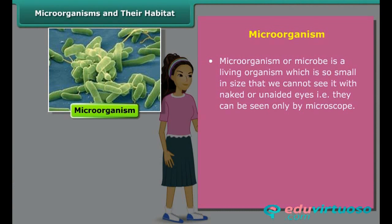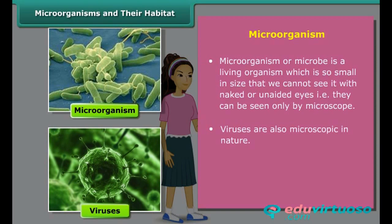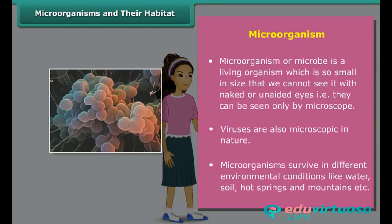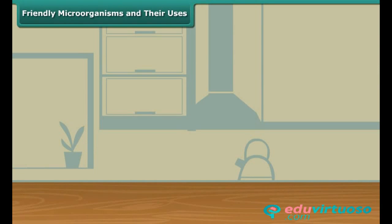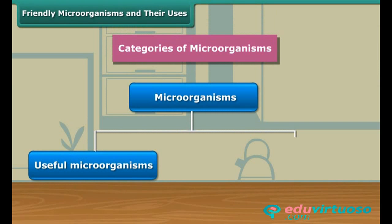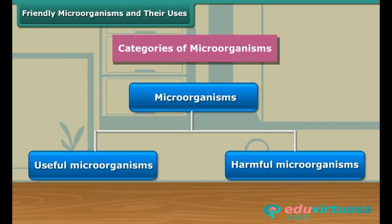A microorganism or microbe is so small in size that we cannot see it with naked or unaided eyes. They are broadly classified into four major groups: bacteria, fungi, protozoa, and algae. Viruses are also microscopic. Microorganisms can survive in different environmental conditions. These microorganisms are broadly categorized into useful microorganisms and harmful microorganisms.